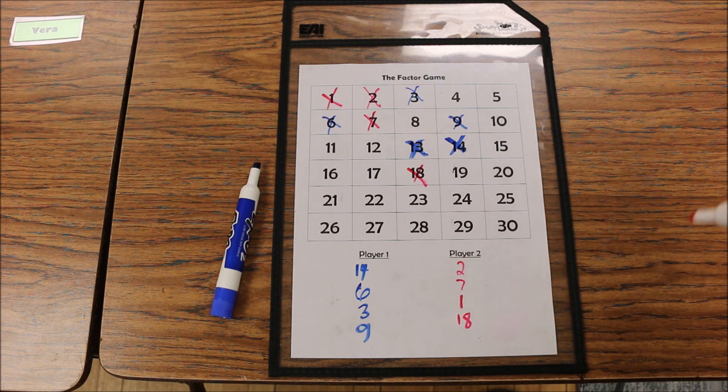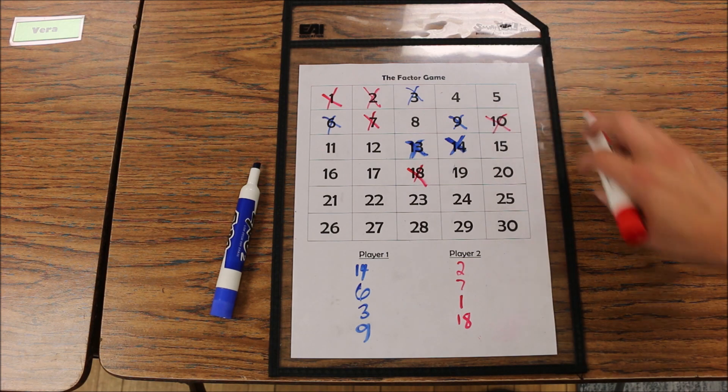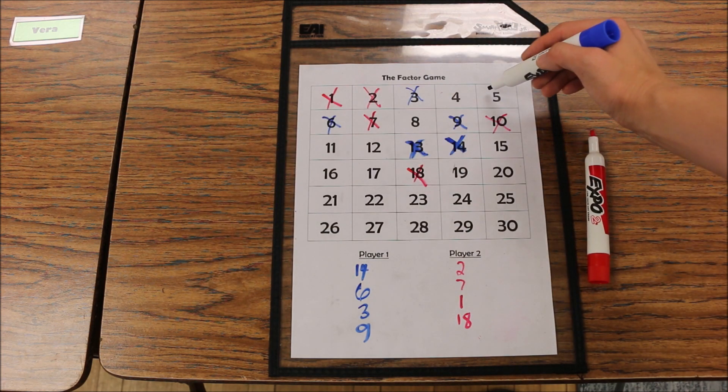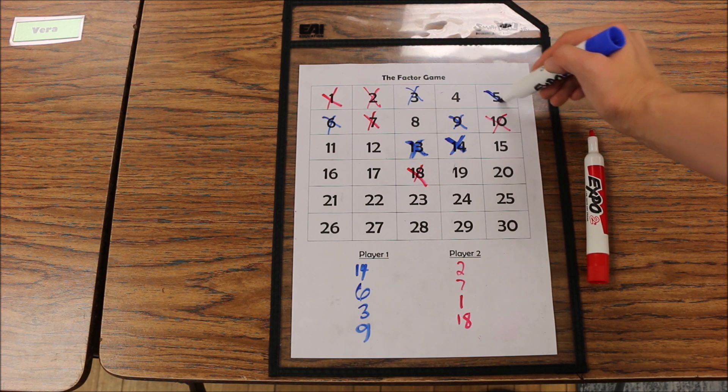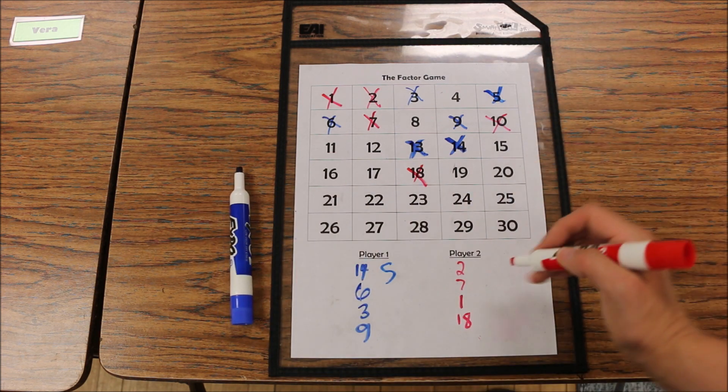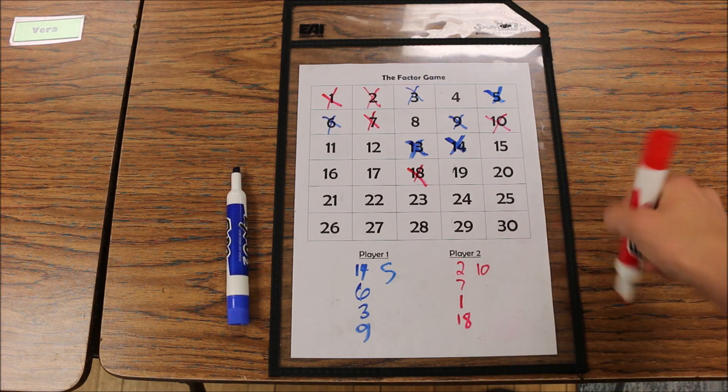Now it would be player 2's turn and they might mark, for example, 10. The only factor of 10 that's available is 5, so player 1 gets to mark the 5. So 5 points for player 1 and we forgot to put down player 2's points was 10.